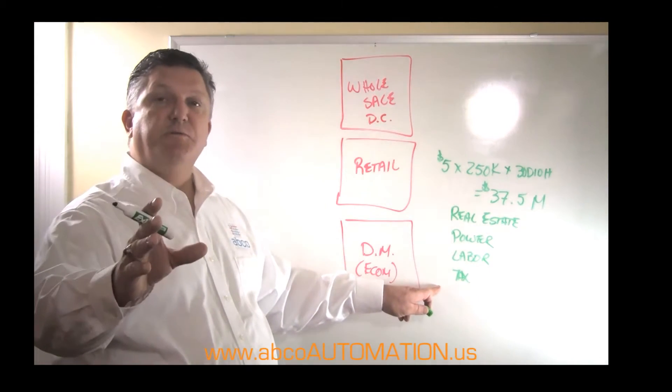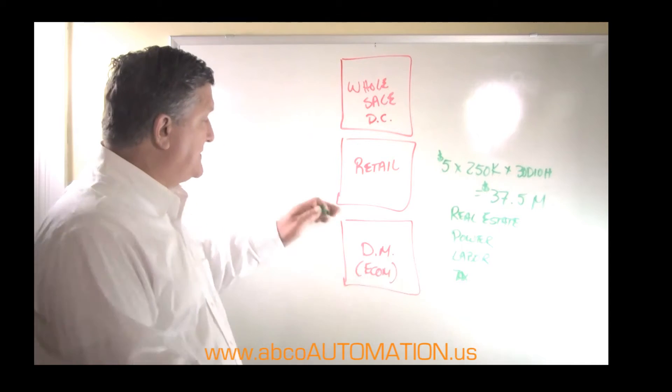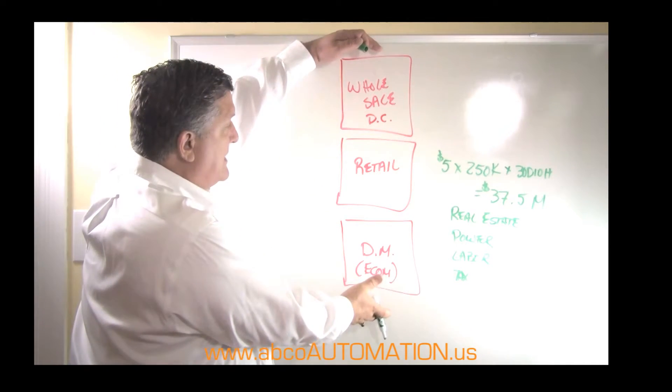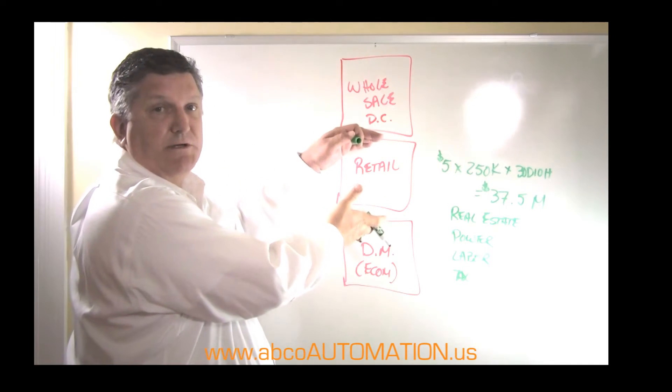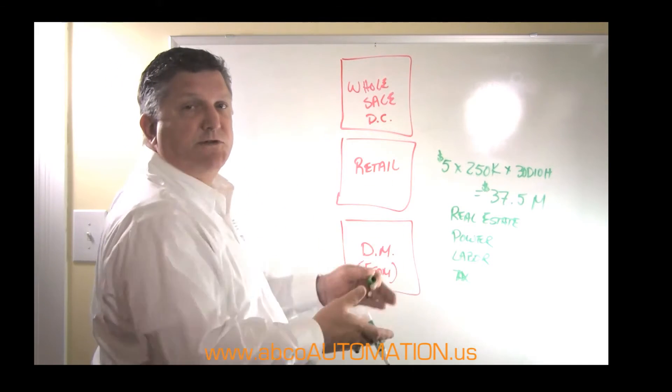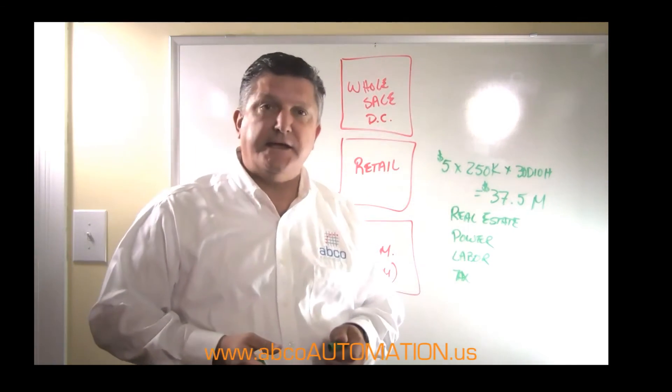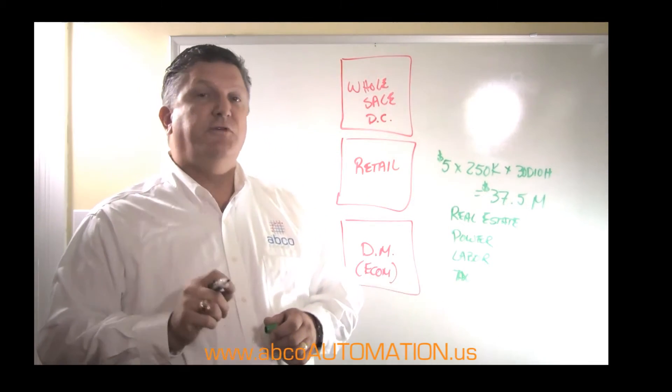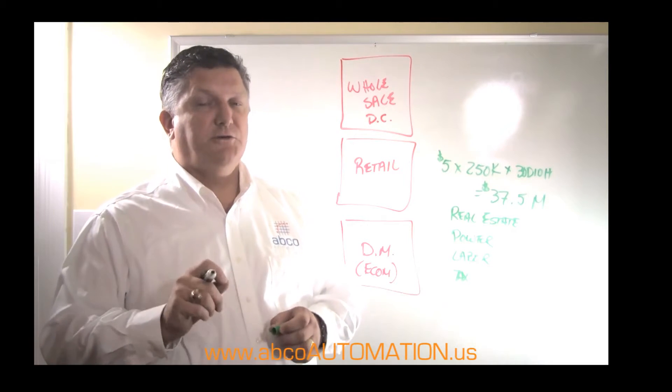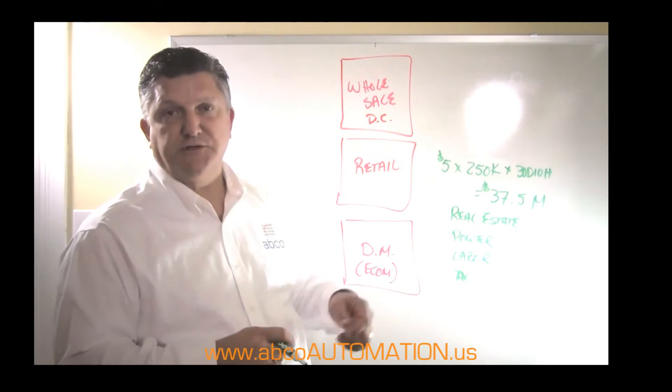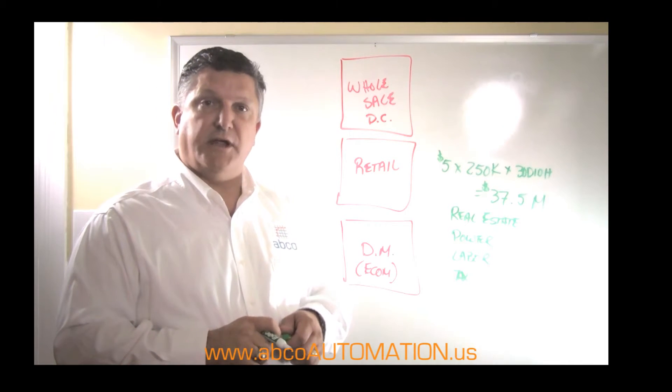So one of the ways that you can become a hero in your company is to figure out how can I take two of these boxes, or even all three, and smash them together into one building. So that I'm using one set of inventory to feed wholesale, retail, and e-com all at the same time. If you can figure out how to do that, you will be a hero in your company. And you can potentially save your company as much as $37 million a month. That's a lot of money.